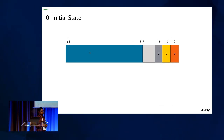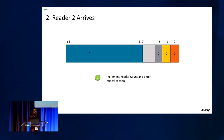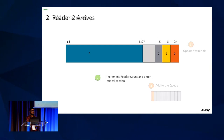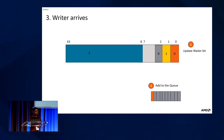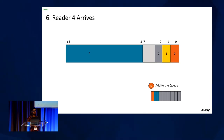In the initial state all bits are zero and the lock is unlocked. The first reader arrives, sees the lock is unlocked, changes the count to one, and enters the critical section. The second reader arrives, sees there is already a reader, increments the reader count, and also enters. When a writer arrives it sees active readers, adds itself to the wait queue, and updates the waiter bit. A third reader arrives but, because there are waiters in the queue, it cannot run in parallel and also adds itself to the wait queue.